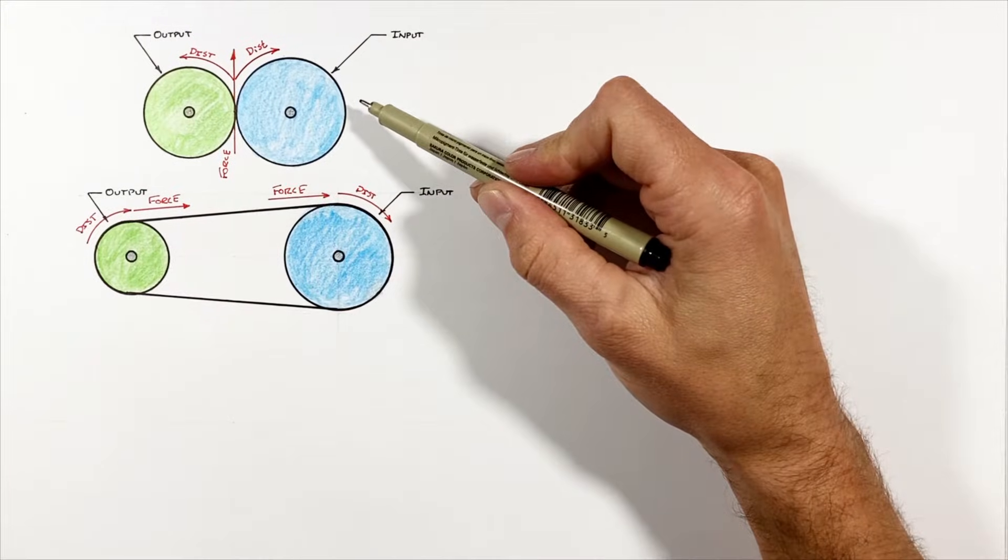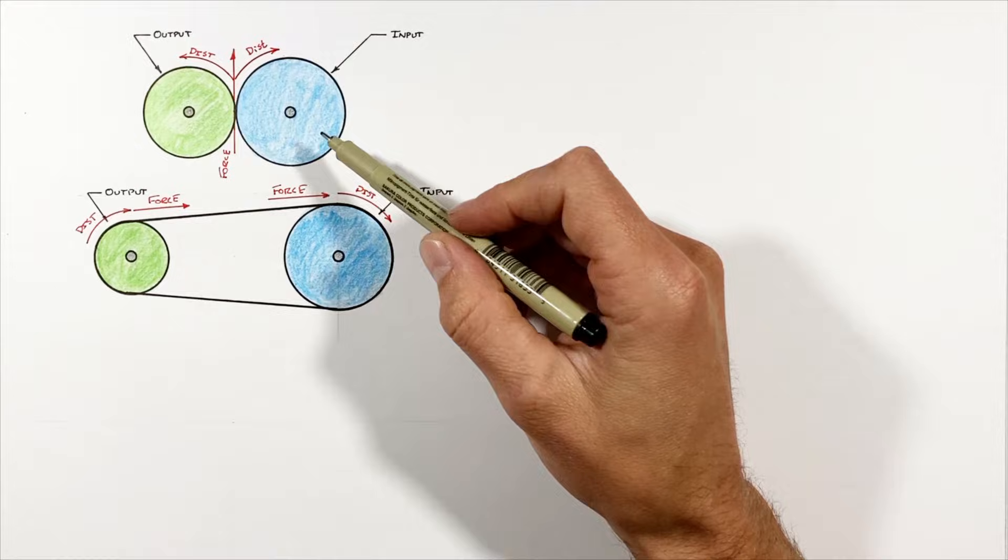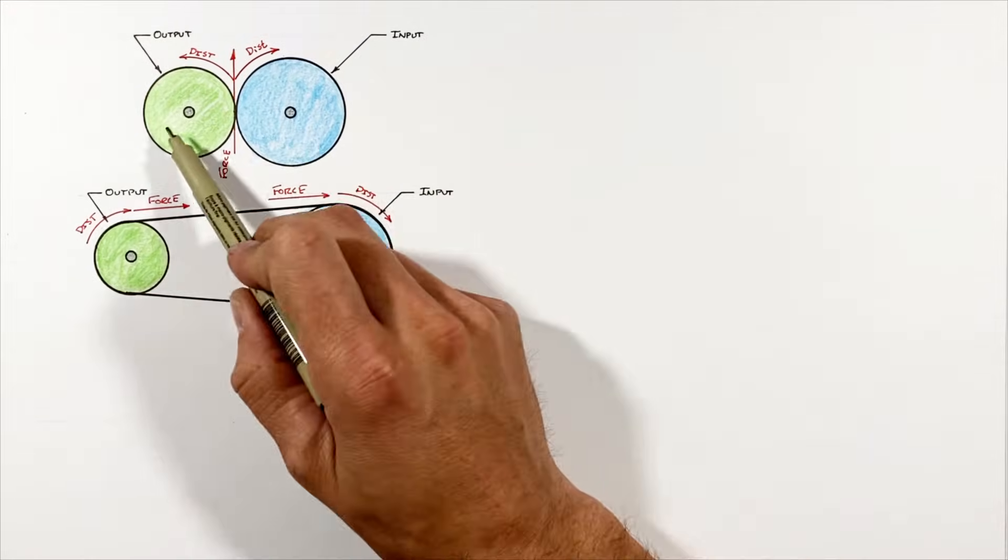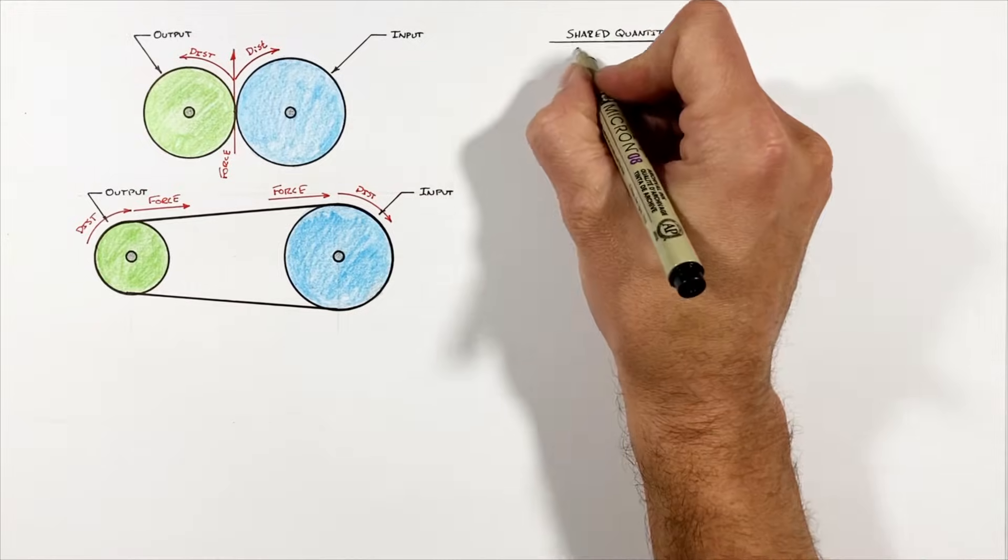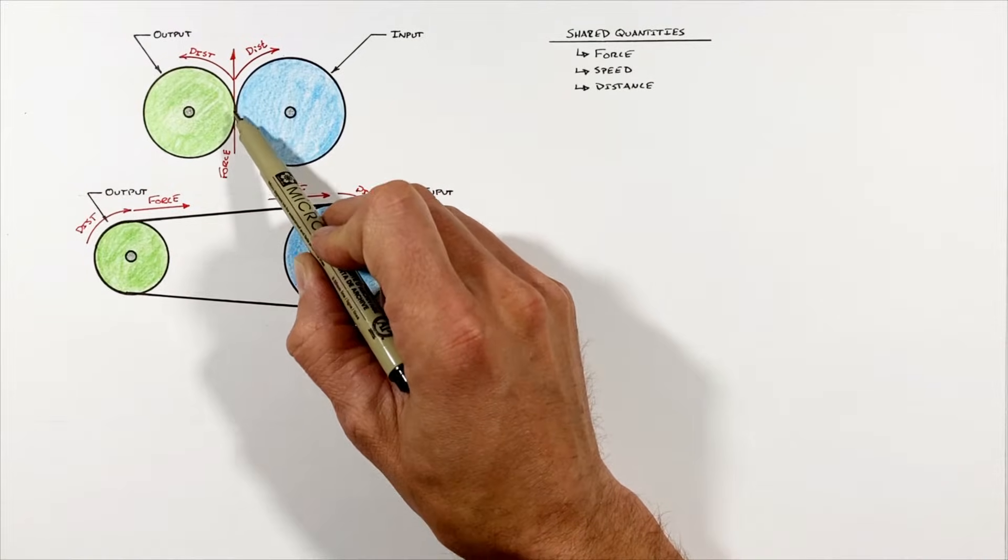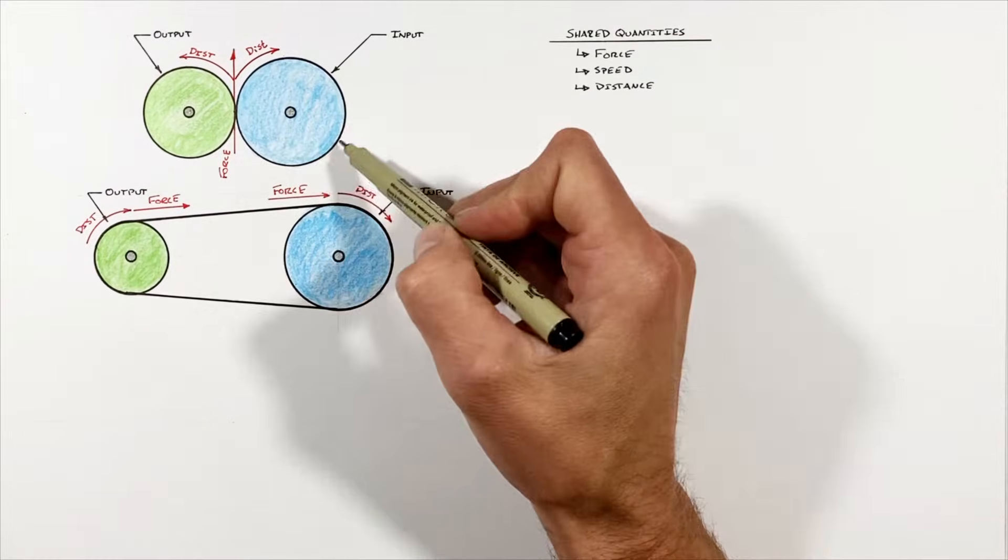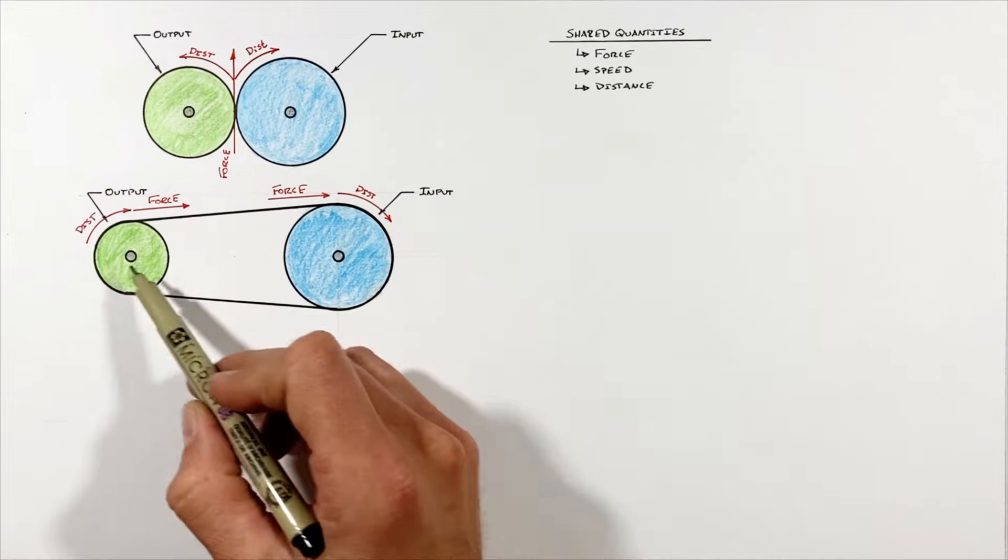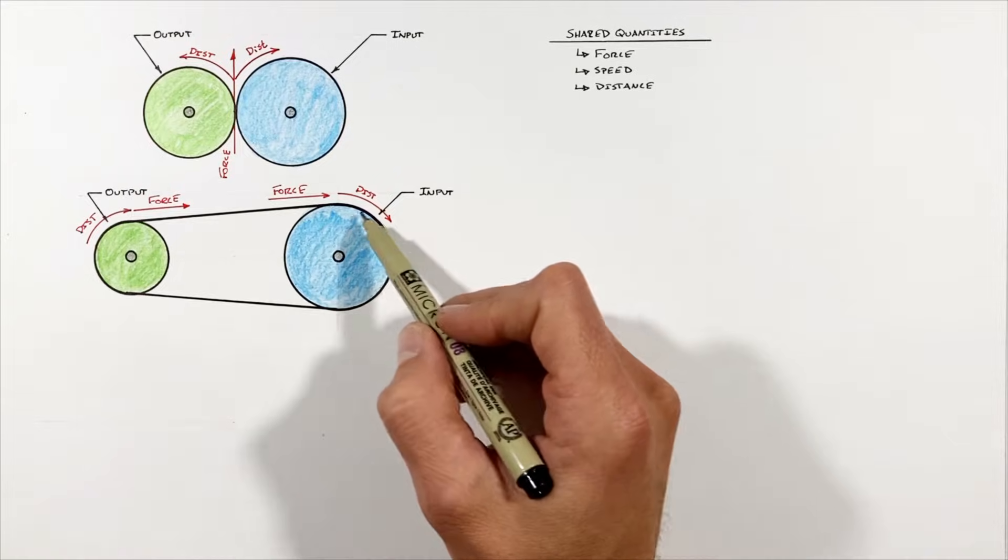See, just like with simple gears, sprockets and chains share what we call tangential quantities. That is, the motion at the edge of the gear or the sprocket is the same at both the input and outputs. In the case of a gear set, it's the gear teeth meshing directly against each other that causes force, speed, and distance to be the same between the input and output gears.